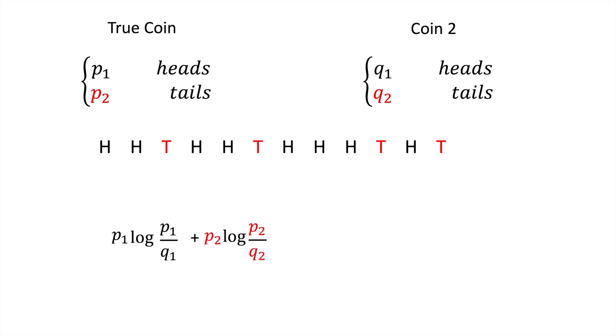Remember what this expression represents? The normalized log probability of the true likelihood divided by the likelihood of the second distribution. All we did was simplify this initial expression for the coin example with basic log rules, and we got to this equation.